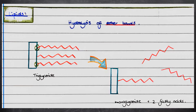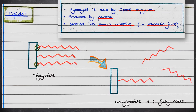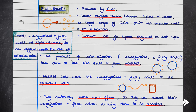Lipid digestion involves the hydrolysis of ester bonds. A triglyceride is hydrolyzed to produce one monoglyceride — a glycerol bound to one fatty acid — and two free fatty acids. This hydrolysis is catalyzed by lipase enzymes, which are produced by the pancreas and secreted into the small intestine via pancreatic juice. Bile salts, produced by the liver, lower the surface tension between lipids and water, causing large lipid droplets to split into smaller ones — this is known as emulsification. Emulsification increases the surface area for lipase enzymes, increasing the rate of lipid hydrolysis.